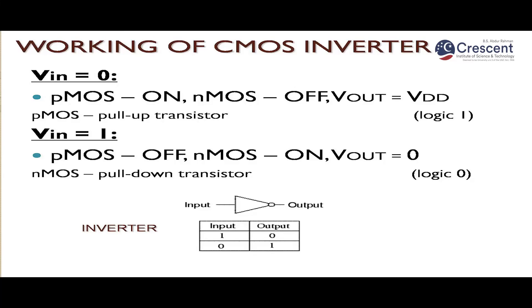When Vin = 0, PMOS is on and NMOS is off, making Vout equal to Vdd (logic 1). PMOS is called the pull-up transistor because it pulls Vout to logic 1. When Vin = 1, PMOS is off and NMOS is on, making Vout equal to 0 (logic 0). NMOS pulls the output voltage to zero. Thus, input 0 gives output 1, and input 1 gives output 0, functioning as a NOT gate or inverter.